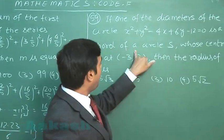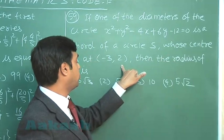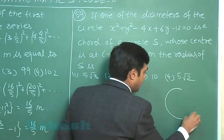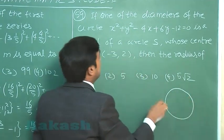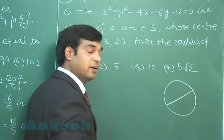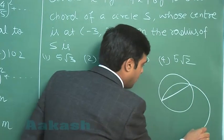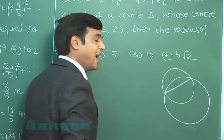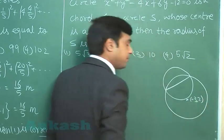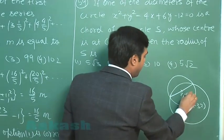is a chord of a circle S, whose centre is at (-3, 2), then the radius of circle S is. One of the diameters of this circle, this one is a chord for another circle whose center is at (-3, 2). For the given circle we can see the center is at (2, -3).